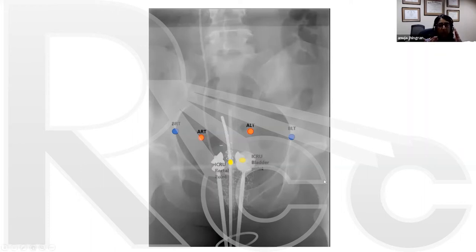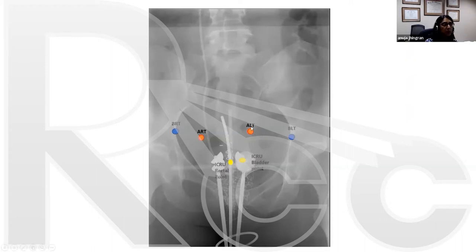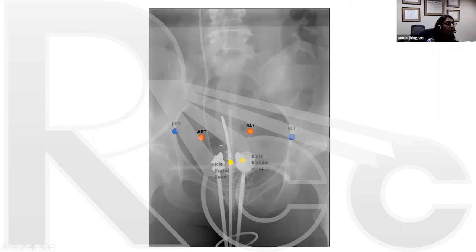What is Point A? Point A is where the uterine artery crosses the ureter — it's basically your pericervical dose, based on anatomical landmarks. Point A is defined as two centimeters above your flange and two centimeters over. Point B is three centimeters from Point A laterally, representing your pelvic wall or nodal dose. On an AP film you can do your Point A and Point B, but you always need a lateral as well.